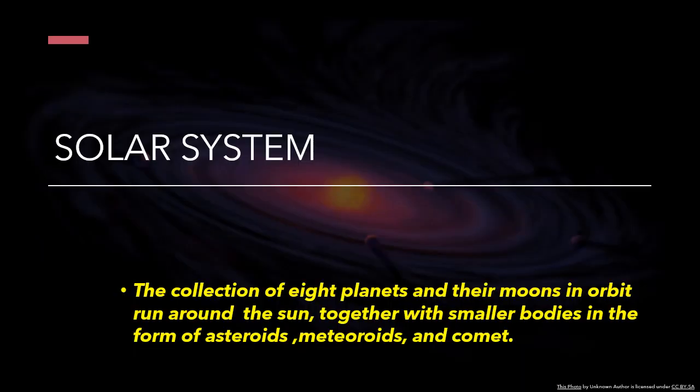Now let us see what is solar system. The collection of eight planets and their moons in orbit around the sun, together with small bodies in the form of asteroids, meteoroids, and comets.